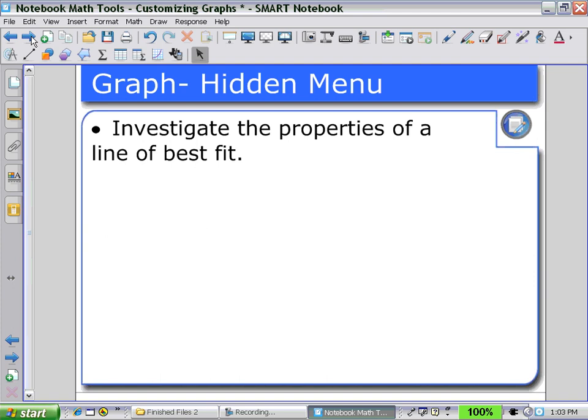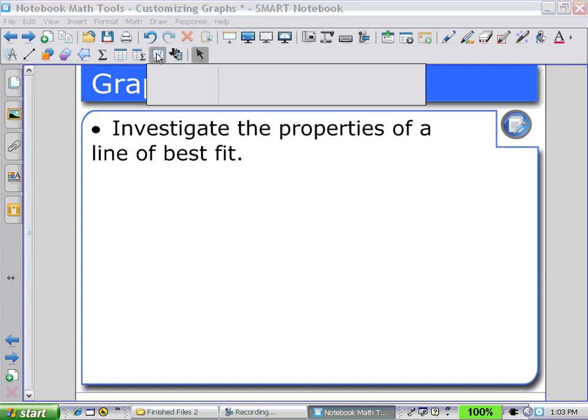Here's another example. Investigate the properties of a line of best fit. So using my graph icon on my secondary toolbar or my math toolbar, I select a quadrant graph.